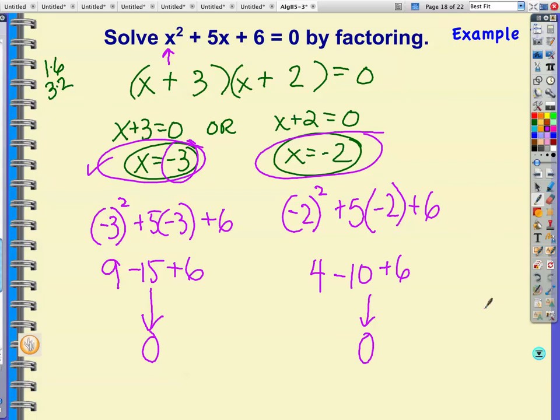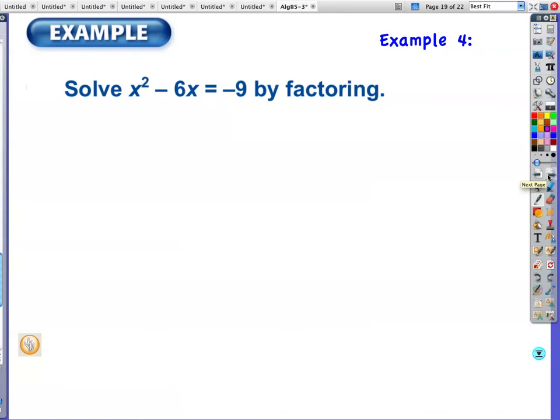Example four: solve by factoring. So I have x squared minus 6x. I want to set it equal to 0 first so I'm going to have plus 9 equals 0. Is there a common binomial factor? There is not. So what do you do? Two sets of parentheses. What times what gives you x squared? x and x. What times what gives you 9? 1 and 9, or 3 and 3.